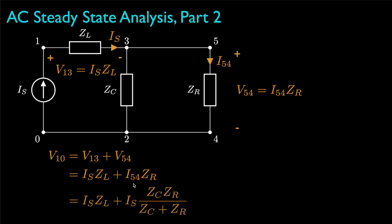But if we use the current division relationship for the current from node 5 to node 4, we'll get a result that depends on the source current and the impedances for all of the elements.